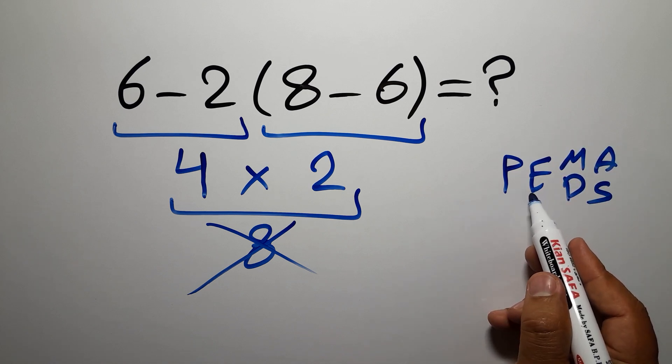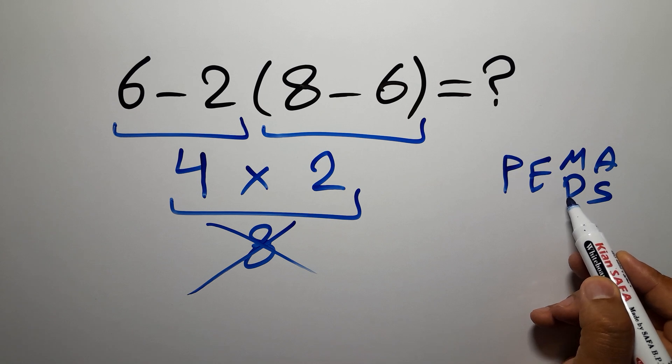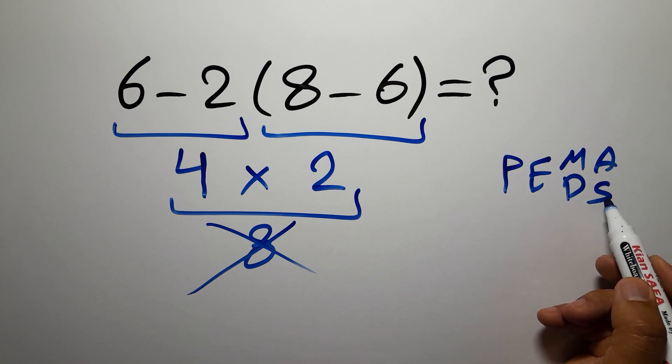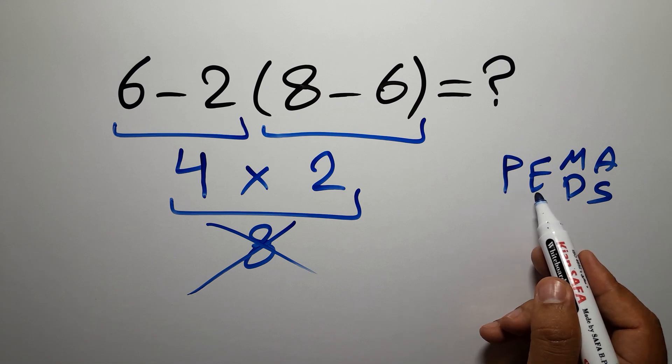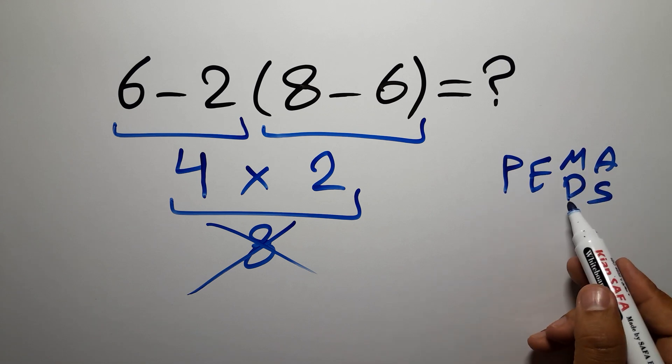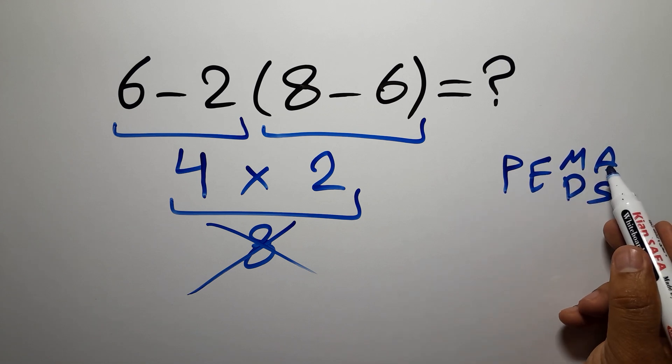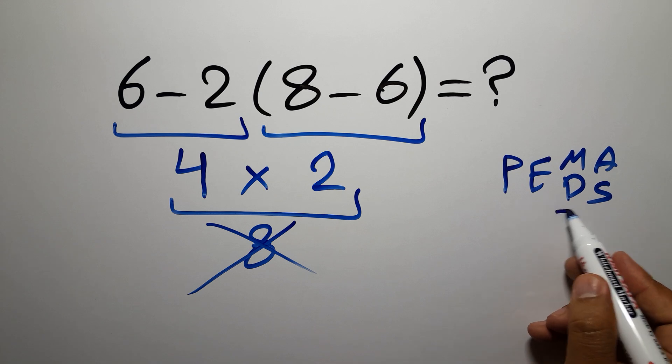E stands for exponents, M and D stands for multiplication and division, and A and S stands for addition and subtraction. First we have to do parentheses, then exponents, then multiplication or division, and finally addition or subtraction.